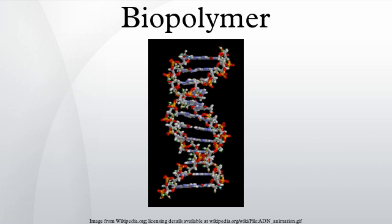Nucleic acids: The convention for a nucleic acid sequence is to list the nucleotides as they occur from the 5′ end to the 3′ end of the polymer chain, where 5′ and 3′ refer to the numbering of carbons around the ribose ring which participate in forming the phosphate diester linkages of the chain. Such a sequence is called the primary structure of the biopolymer.